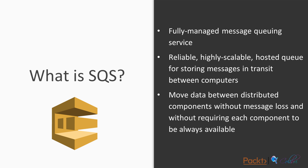You can imagine a producer — any type of application that puts messages onto SQS, which acts as a buffer — and those messages are picked up by a consumer. For example, if your producer goes down due to internet connectivity loss or host issues, your consumer can still read and process those messages because SQS will allow it. SQS decouples your application so that even if part of your architecture goes down, the rest can still process messages.